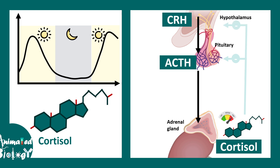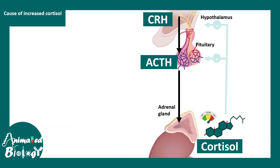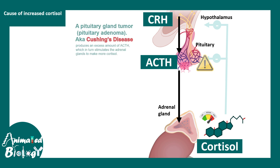If this hormonal axis gets deranged, you get increased levels of cortisol. For example, a tumor at the level of the anterior pituitary — a pituitary adenoma — leads to excess ACTH, which causes excess stimulation of the adrenal gland and more cortisol production. This condition is known as Cushing's disease, which is a very specific type of Cushing's syndrome.